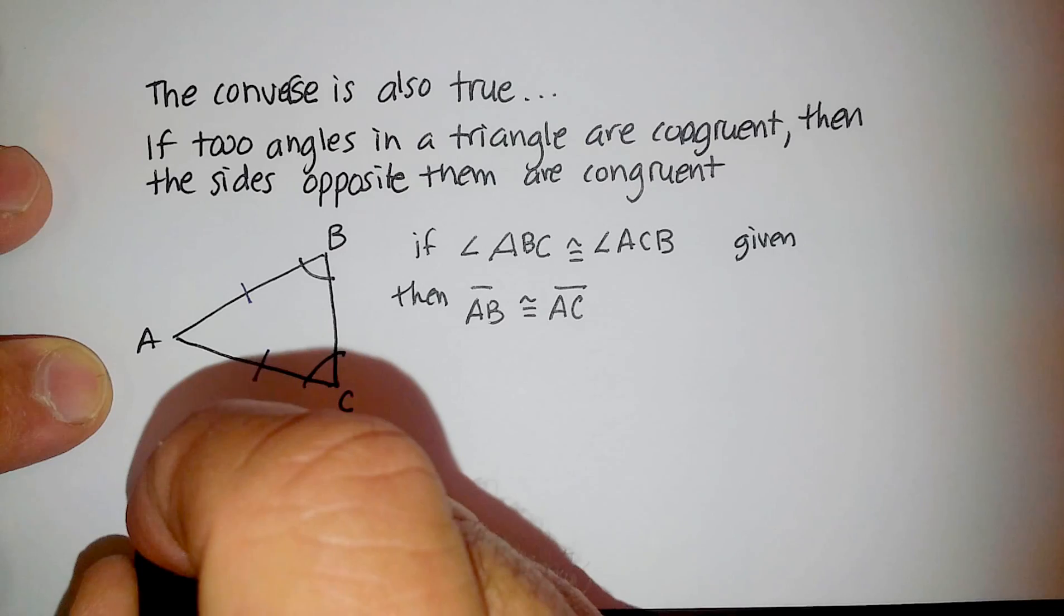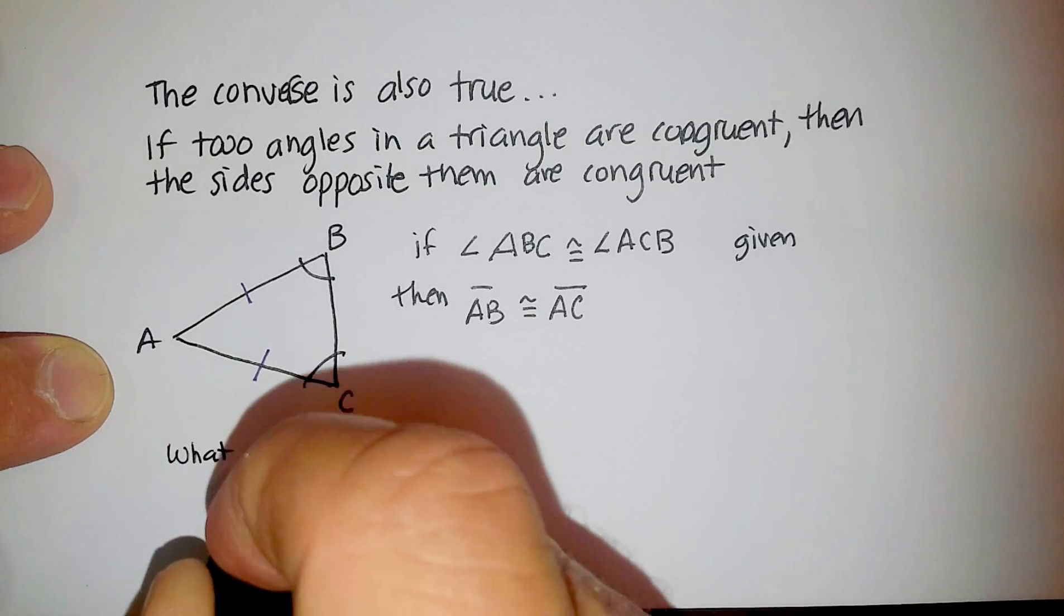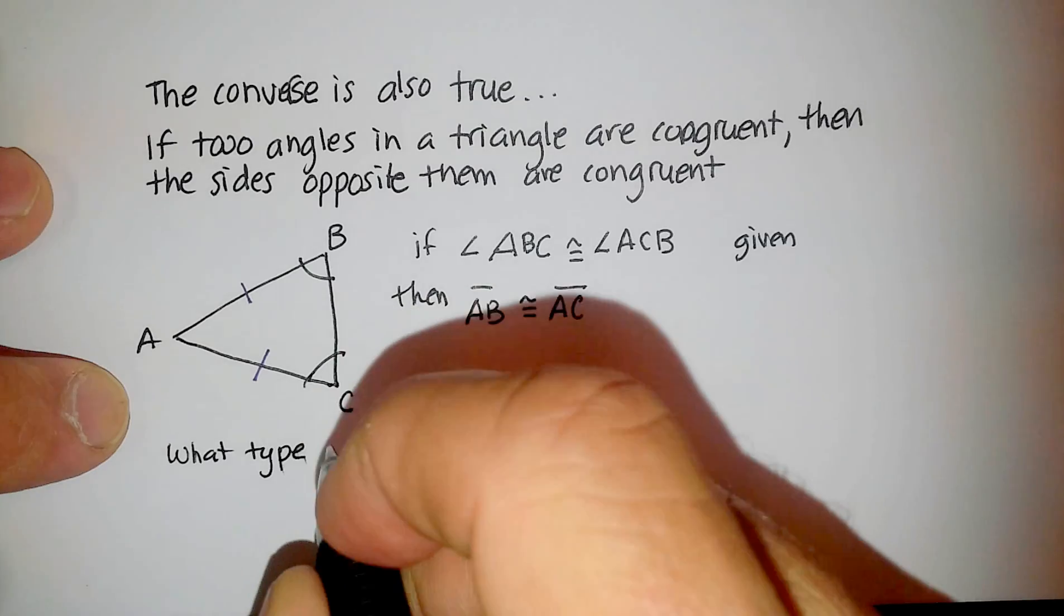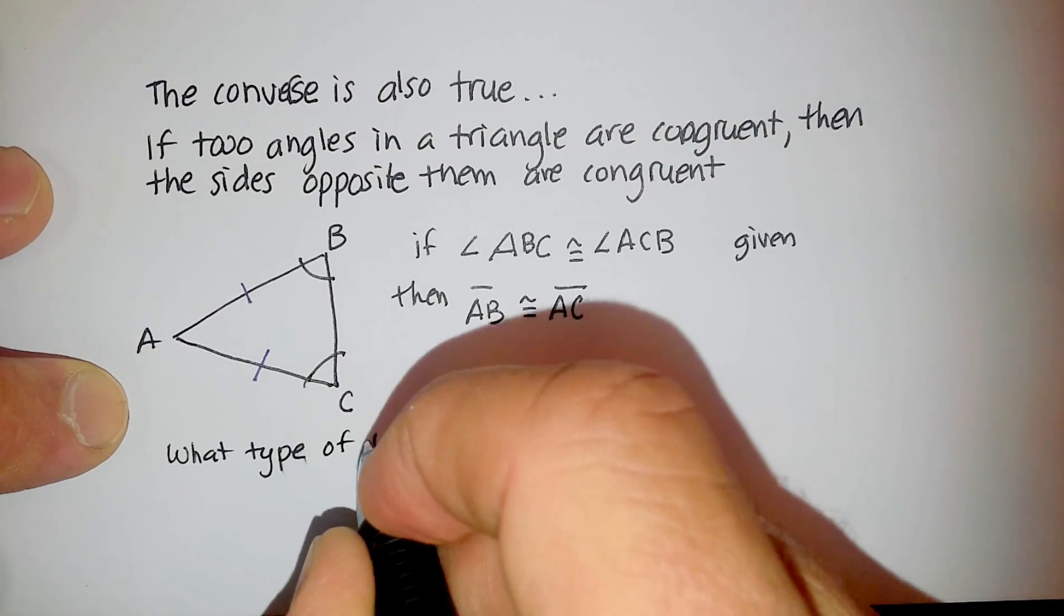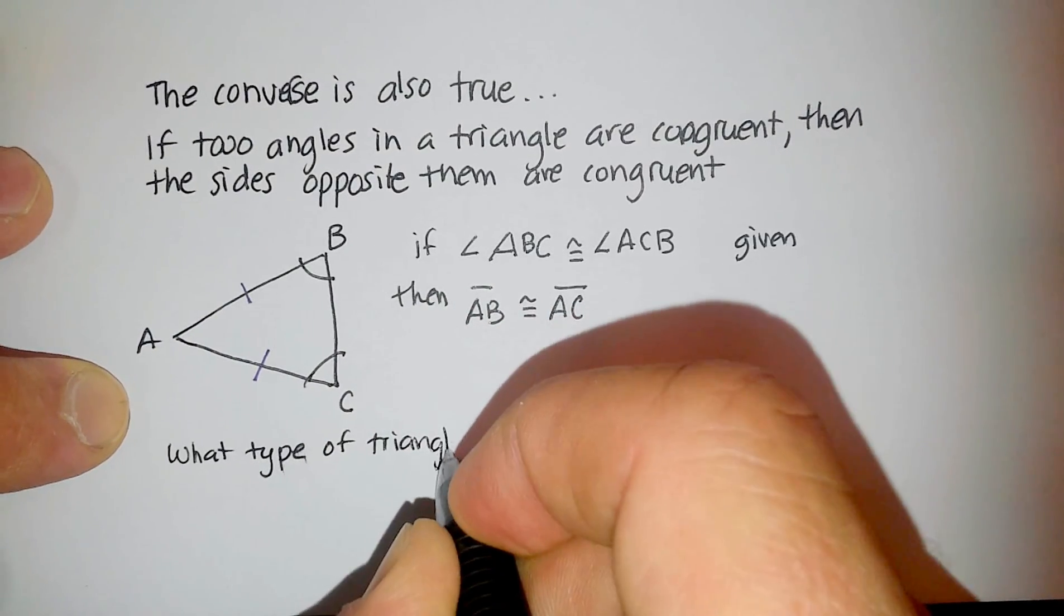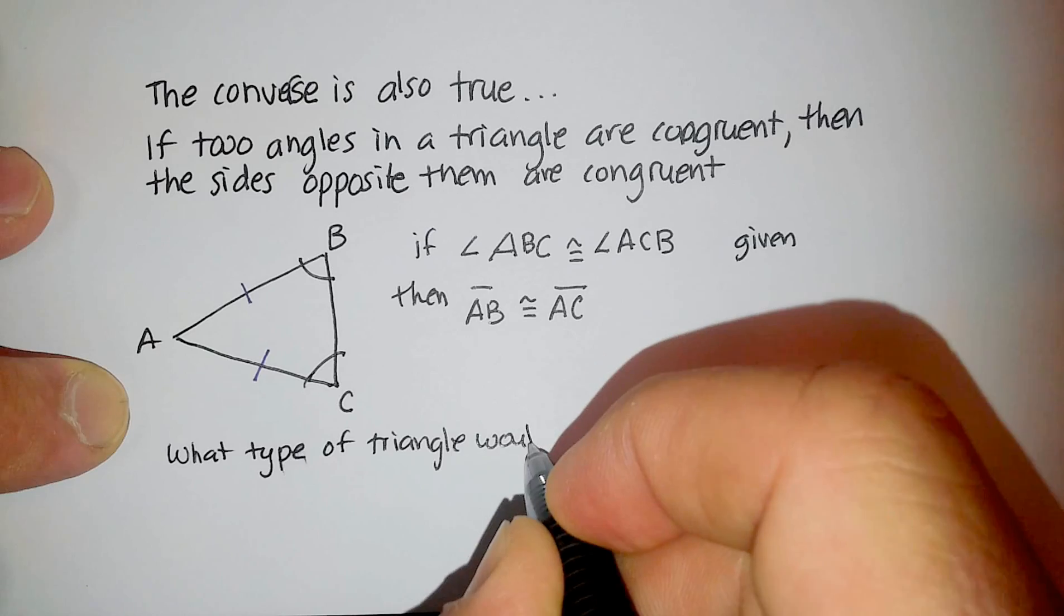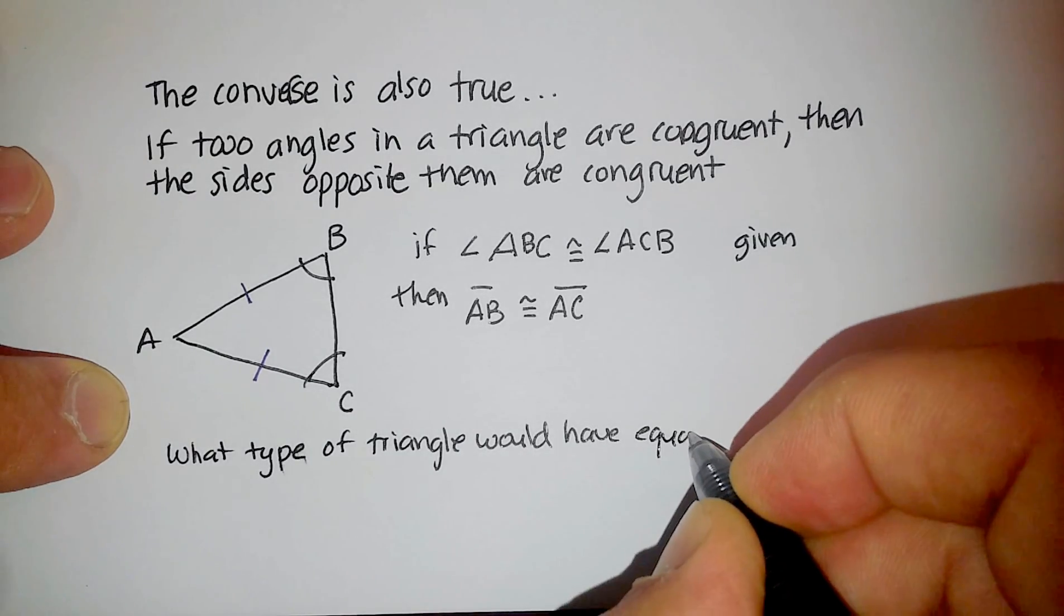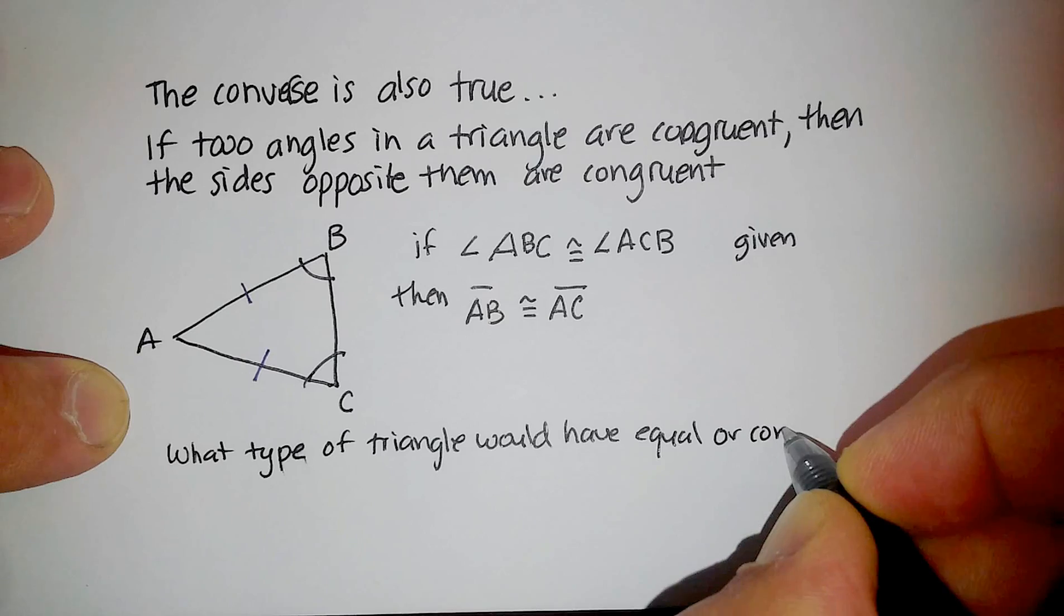Quick question for you. What type of triangle would have two equal sides? So what type of triangle would have two equal or congruent sides?